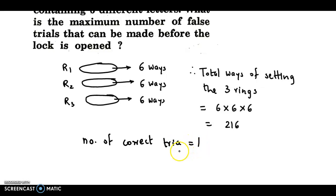And we asked maximum number of false trials. Maximum number of false trials will be 216 minus one. And that is 215.